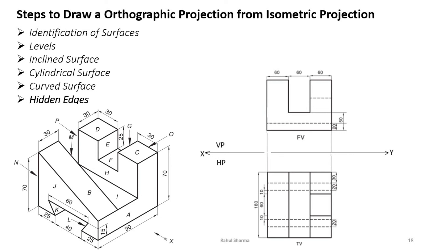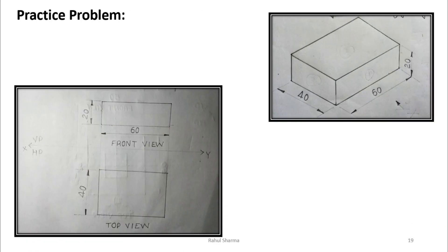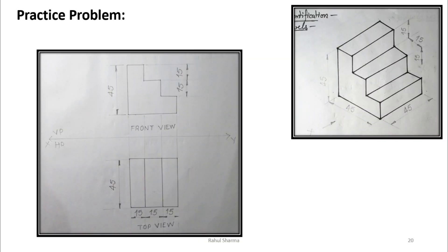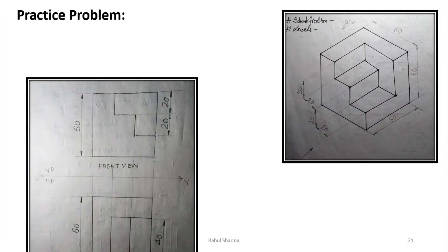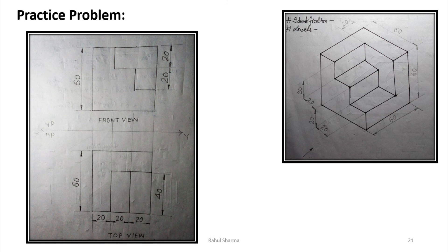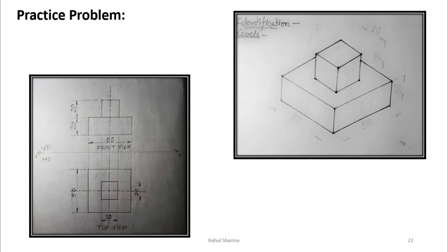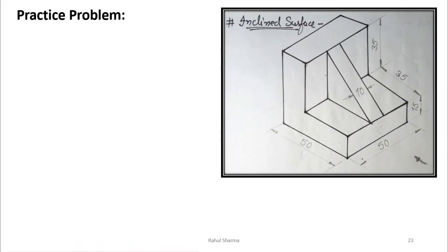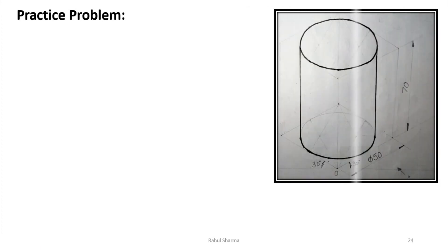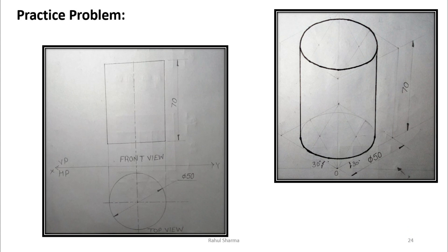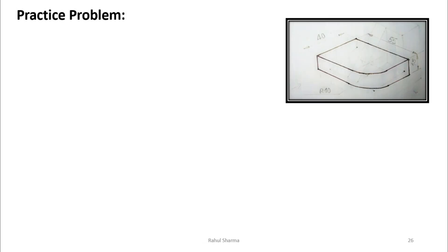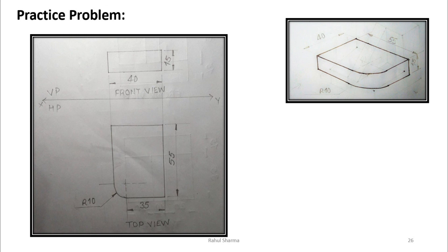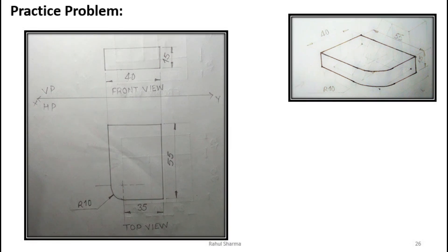Here are practice problem previews: a staircase object with its front view and top view using identification and levels; another object also using identification and levels; one more example for identification and levels; an inclined surface example showing front and top view; a cylindrical surface example with its front and top view; and another example combining cylindrical and cube for the curved part. Separate videos are available for each example.